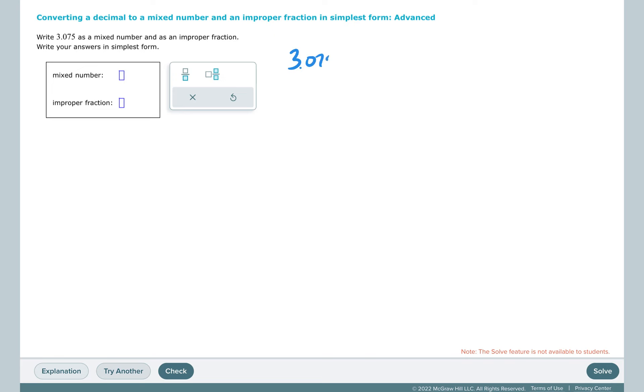So we have 3.075 with place value, that would be 3 and 75 thousandths. I'm going to divide by 25 over 25, since 25 is a common factor of both. 25 goes into 75 three times, and 25 goes into 1,000, I know it goes into 100 four times, so it's going to go into 1,000 four times 10, which is 40 times. So 3 is a prime number that does not go into 40.